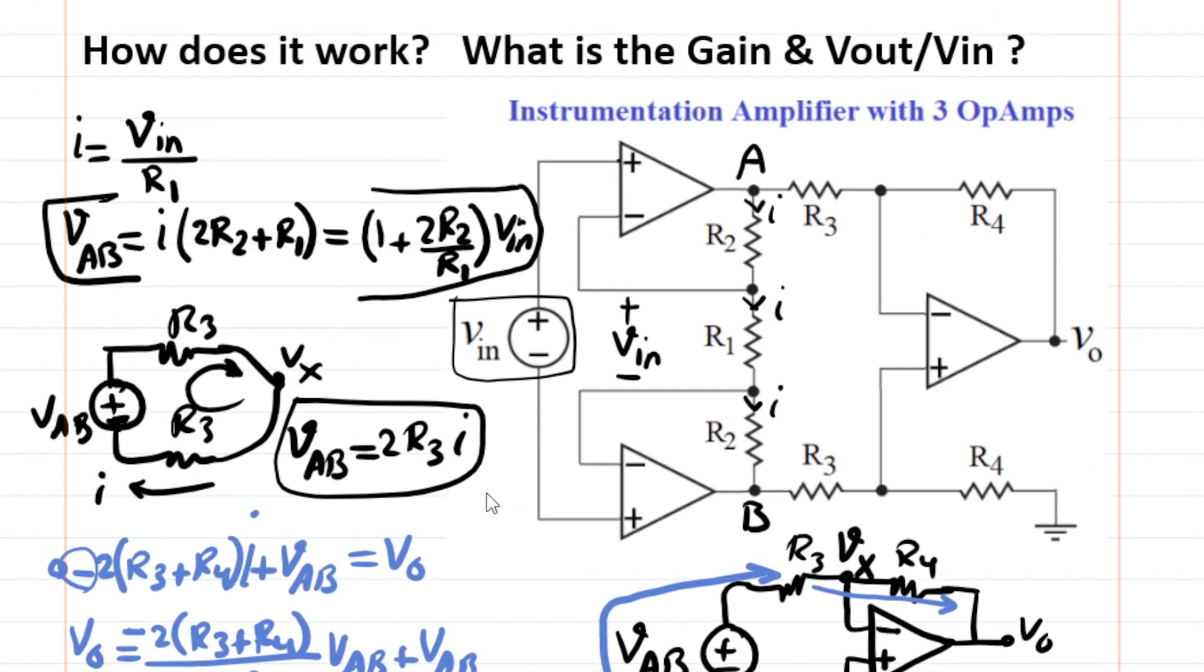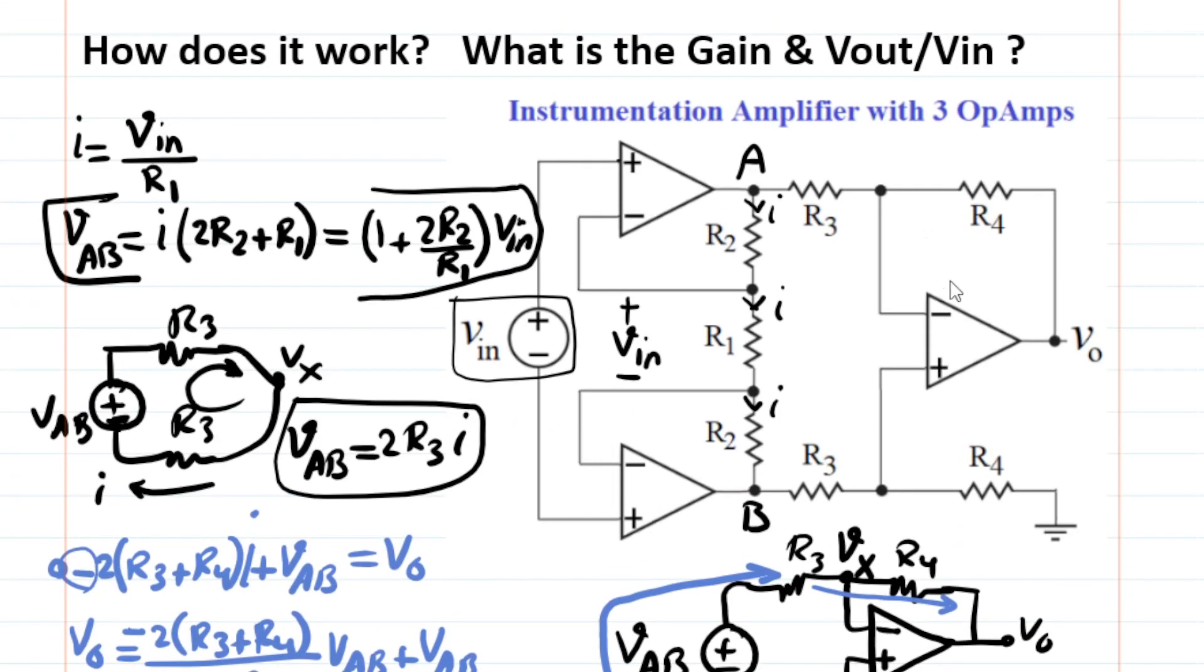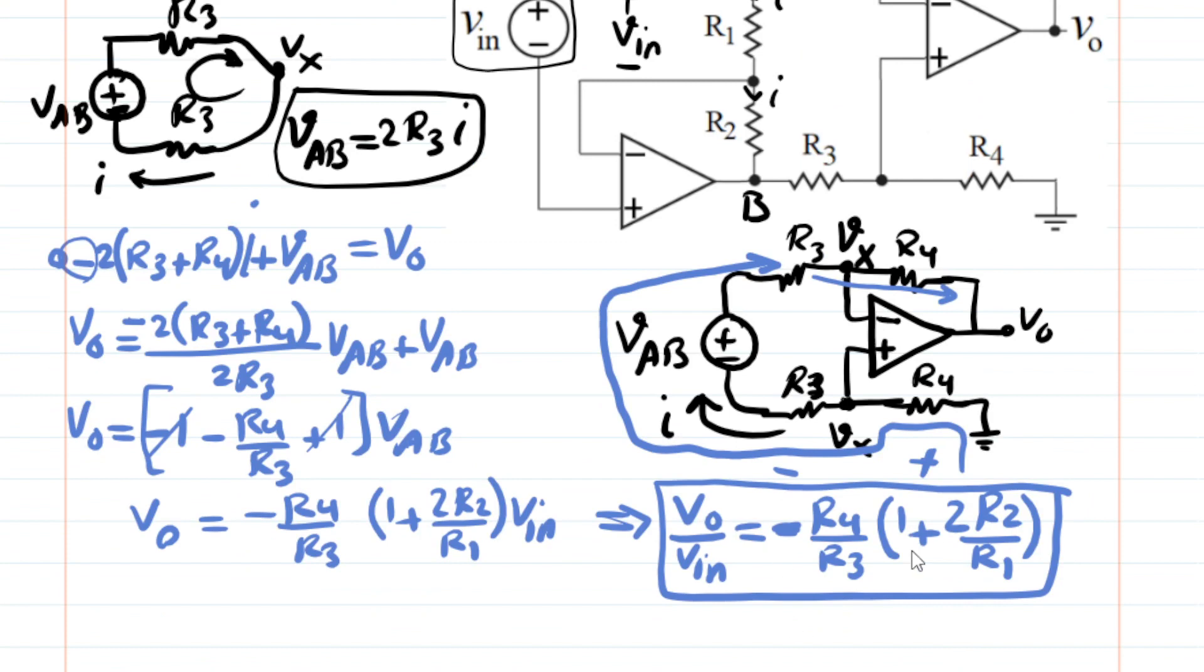So the gain of this instrumentation amplifier is nicely a function of the ratio between R2 and R1, ratio of R2 and R1, and ratio of R4 and R3 in this manner that is shown here.